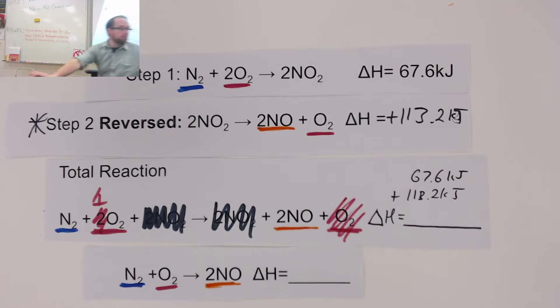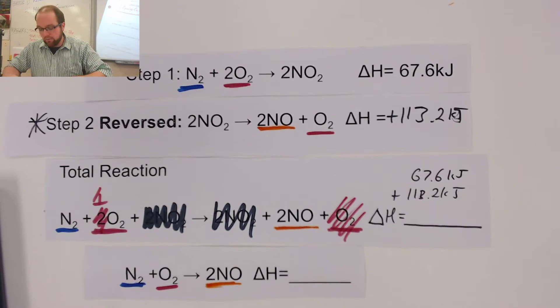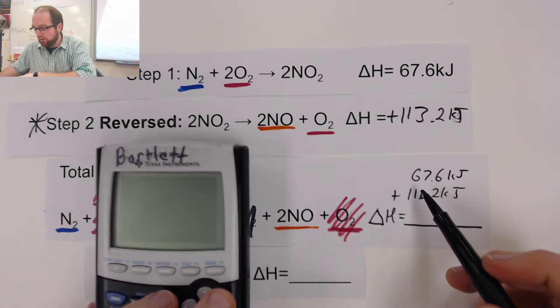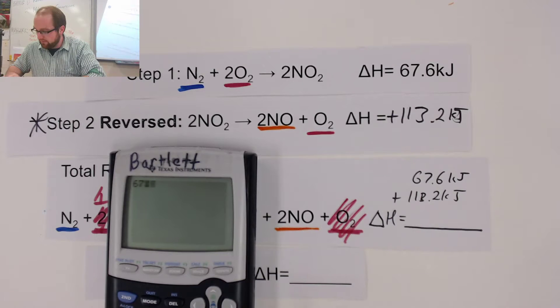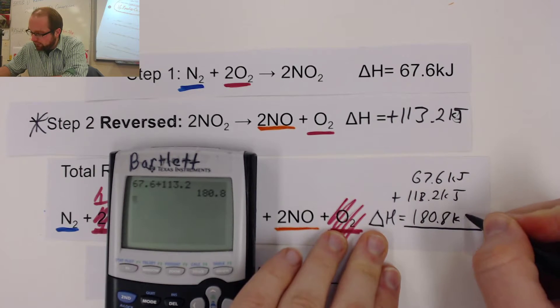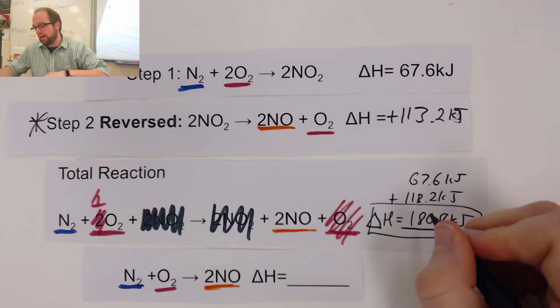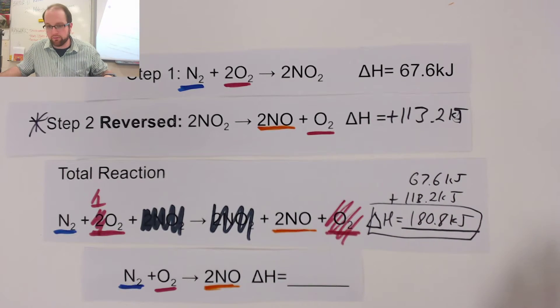Mr. Bartlett doesn't have his calculator with him. Thankfully, it's over here. And I'm back. So, we're going to go ahead and figure out our overall delta H reaction. 67.6 plus 113.2. I get 180.8 kilojoules. So, this reaction overall will create this much energy. It will be an endothermic reaction overall.